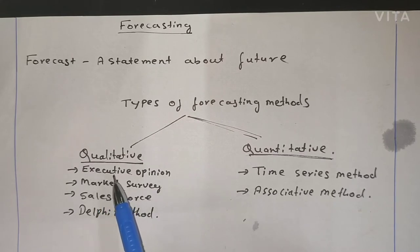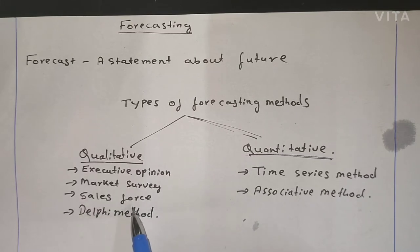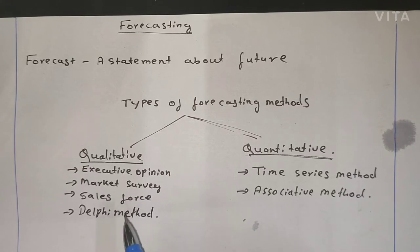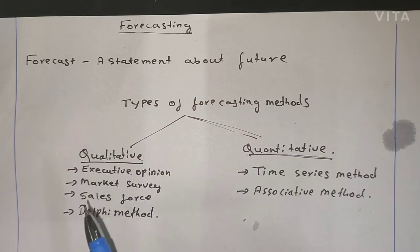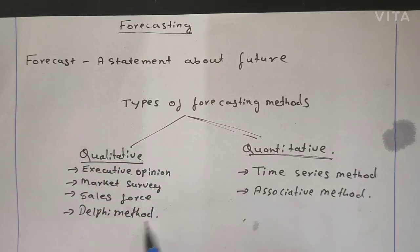There are different types of qualitative methods. One is executive opinion. Second is market survey, where you go and do a survey in the market. Third is sales force — depending on your sales, you try to find your future forecast. You will have your sales persons and distributors to gather data. Then there is the Delphi method, where experts give their opinion on the market. This is qualitative, where there is no much calculation.